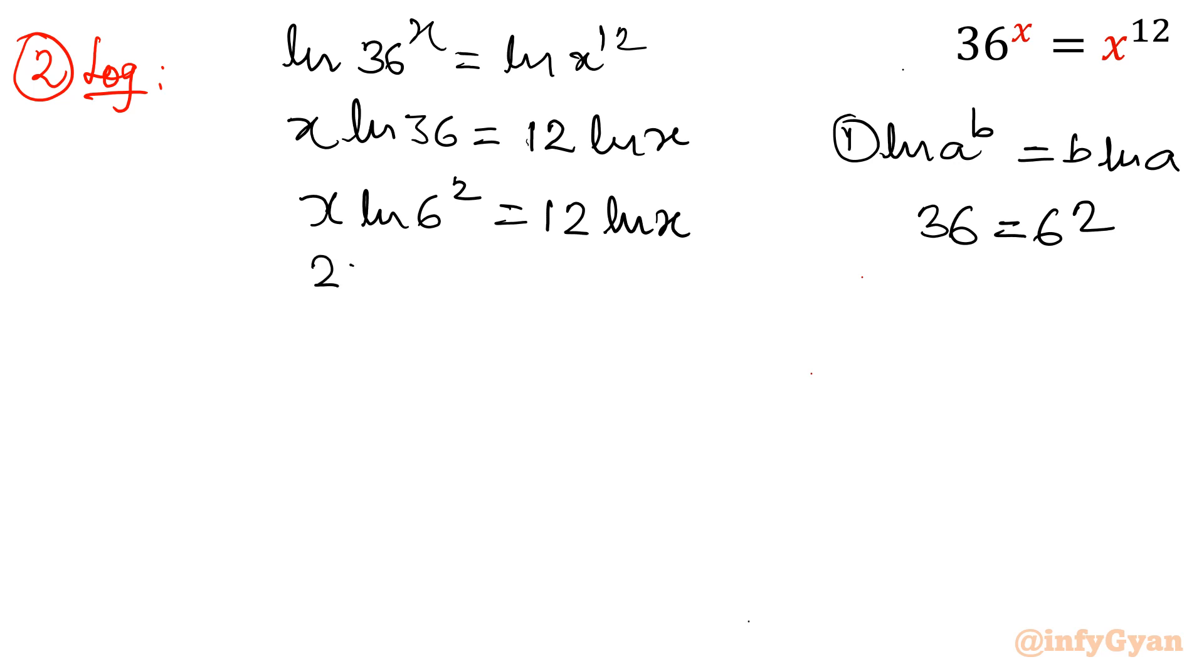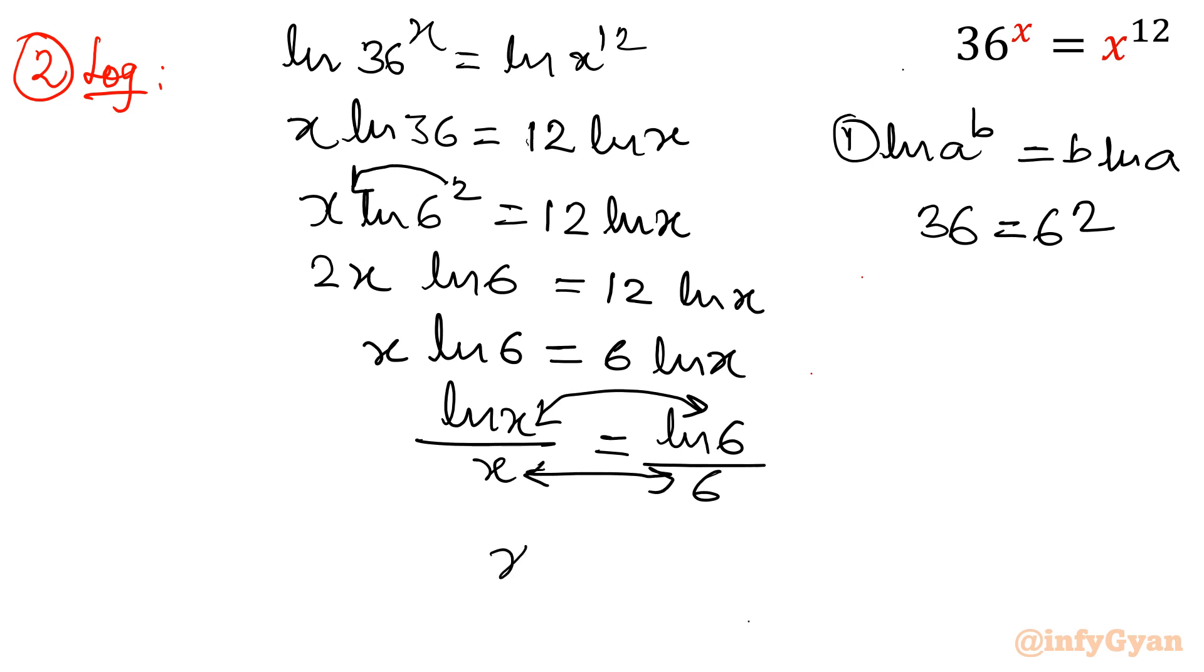So I will write x ln 6 square equal to 12 ln x. So it will become 2x, same property. This 2 will come as a multiplier coefficient. 2x ln 6 equal to 12 ln x. Divide both sides by 2. x ln 6 equal to 6 ln x. Divide both sides by x or rearrange the order. I can write ln x over x equal to ln 6 over 6.